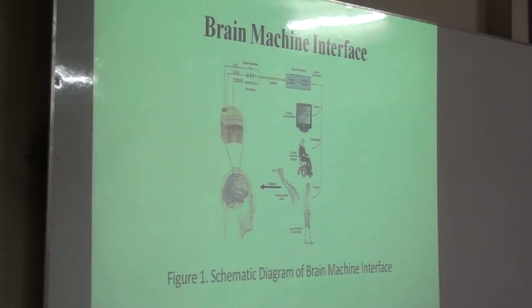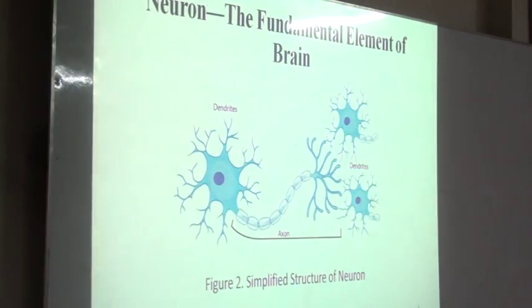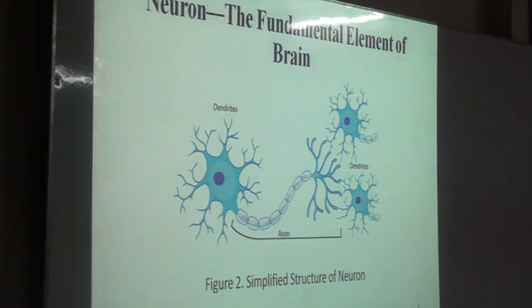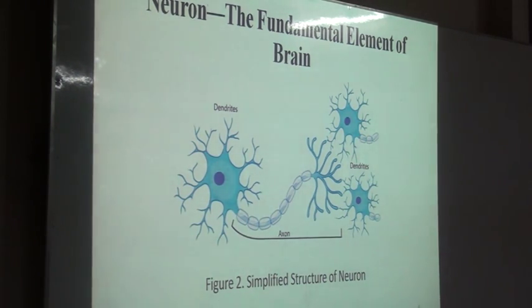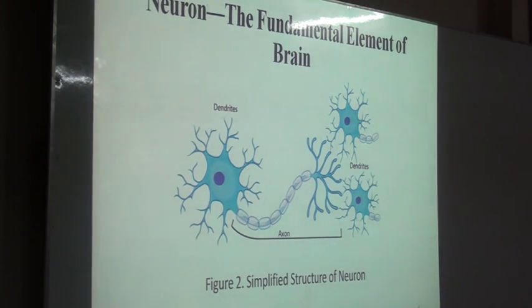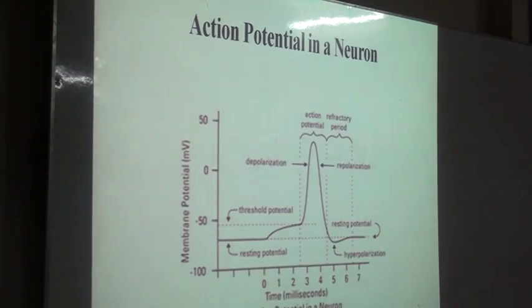Whatever the signal form is, we know that it is generated from the neuron, which is the fundamental element of our brain. The blue part in the figure is the brain cell body, and the electrical impulse is generated from the cell body. The axon transfers the signal to other neurons, and the next neurons collect the signal through their dendrites.